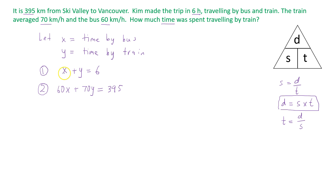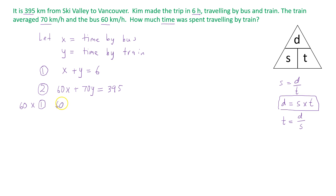Now we have two equations and two unknowns — a system of equations. The easiest way to solve this system would be to use elimination. I'm going to multiply equation 1 by 60 to eliminate x. Multiplying each term of equation 1 by 60 gives us 60x plus 60y equals 360.